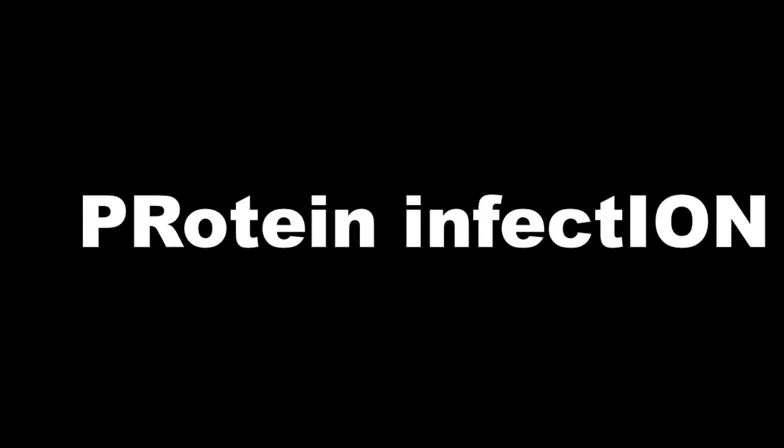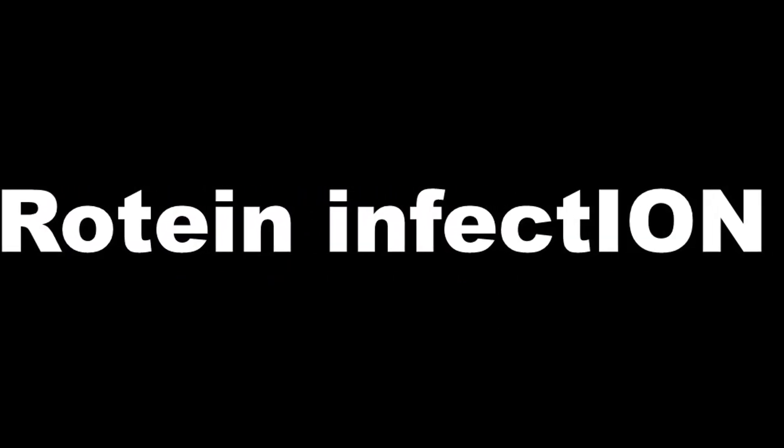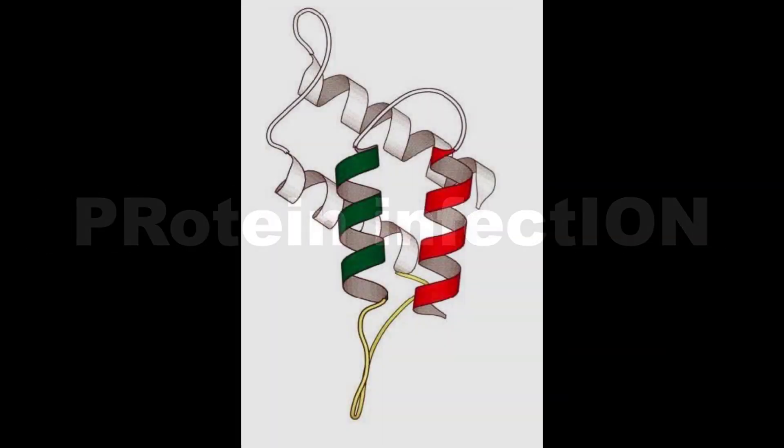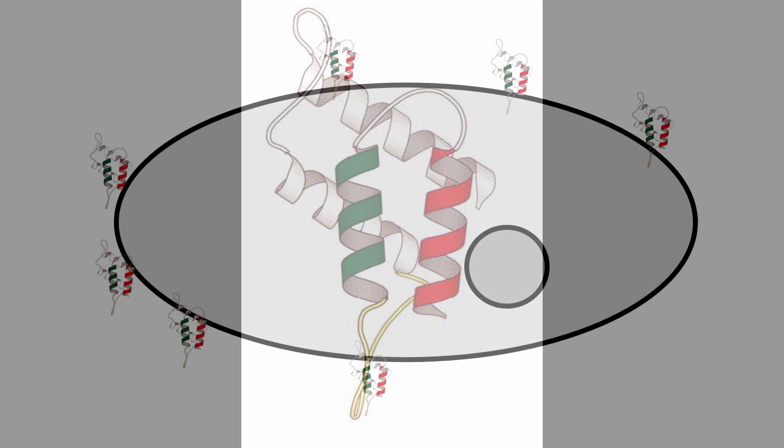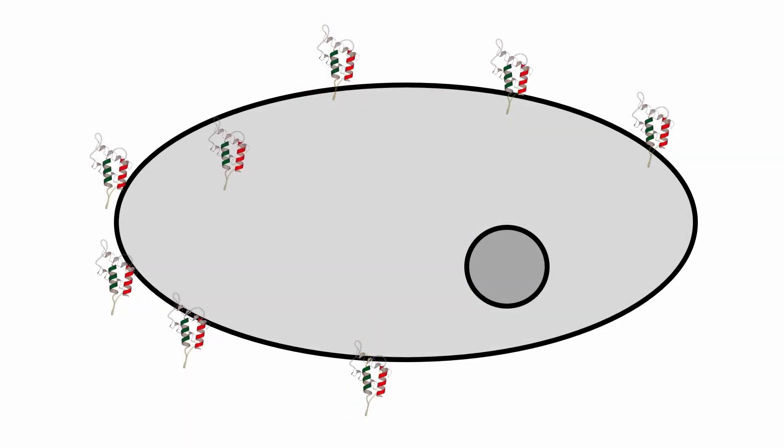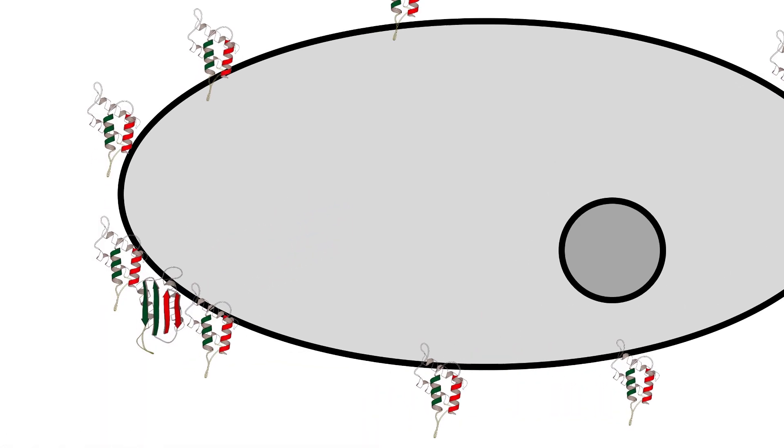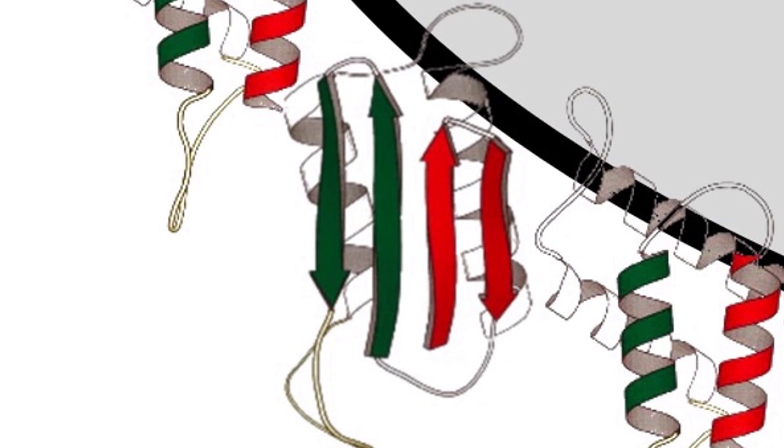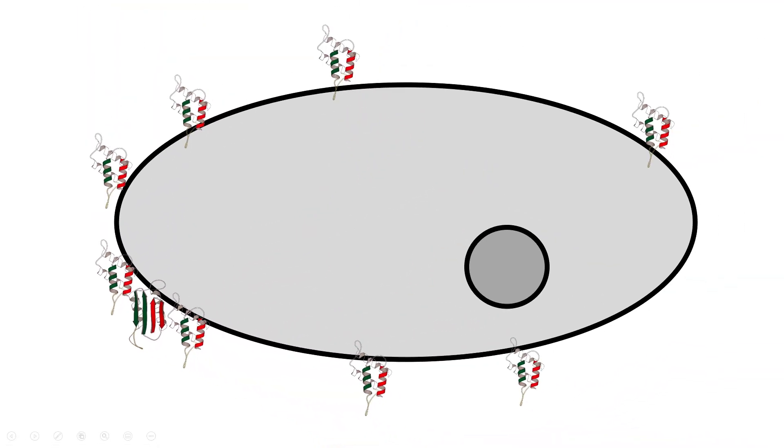The word prion comes from the words protein infection. So PR from protein, ION from infection. And that helps describe what's happening. So there's this protein that's found in your body called PRP. It's produced by your cells, it has a particular shape. And over time, some of these proteins are broken down and replaced by the cell. However, something can go wrong sometimes where a differently folded form of this protein is made. This differently folded form has two bad properties. First, the cell can't really break it down very easily.